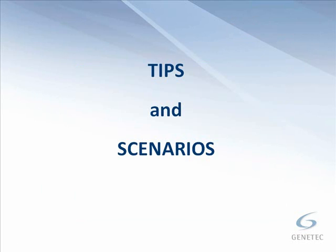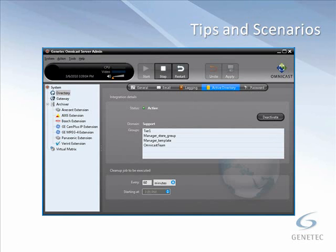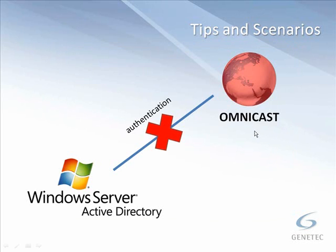Now we're on to tips and scenarios — things to know about your Omnicast Active Directory integration. If your Windows Active Directory goes down, users already connected to Omnicast will remain connected as long as the Omnicast directory service is running. New users will not be able to log in, except for the admin user, since it's local to the Omnicast server and not part of the Active Directory system. When a new user is added to a group in Windows Active Directory, they will not show up in the Omnicast config tool until they log in for the first time. Be careful when forcing a resynchronization by deactivating and reactivating, since it will kick all current Omnicast users off the system.